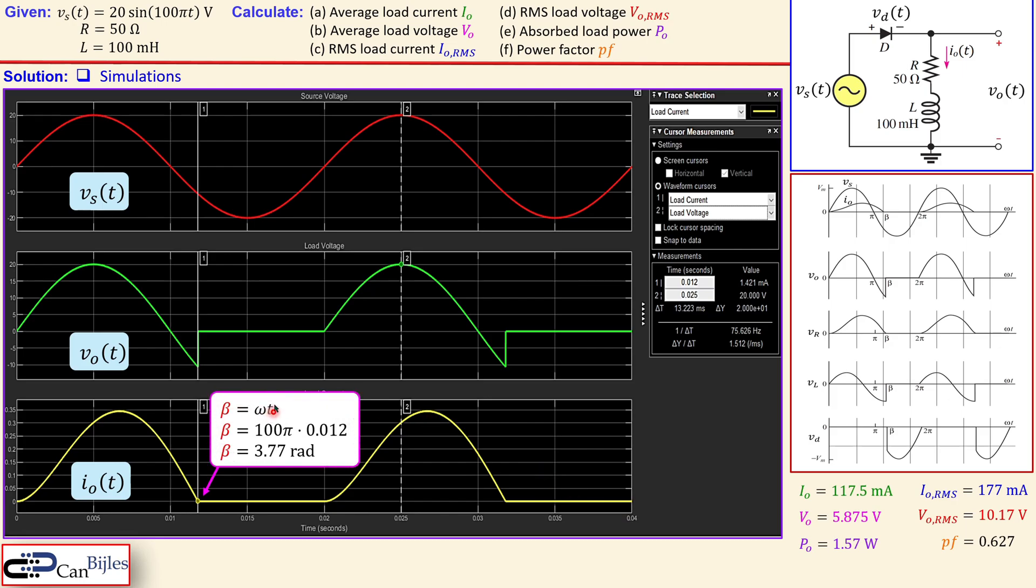So beta is here given by omega t. What is omega in our circuit? It is 100π. So 100π times this time, which is then 0.012, will be if you calculate, that will be 3.77 radians. Now we had, if you remember, beta was 3.704. So this is a small difference but it is good enough. And also we have also checked that this is indeed extending because the red curve which is our input voltage is actually zero here and then gets down.